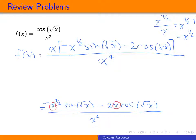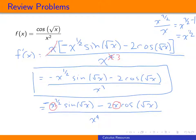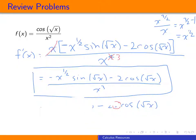There's one more thing we can do: we have an x in the numerator and x to the fourth in the denominator, so we can cancel one x. That leaves us with negative x to the 1/2 times sine of square root x, minus 2 times cosine of square root x, all over x cubed. That is as simplified as we can get. This problem involved not only a quotient rule but a chain rule inside a quotient rule.